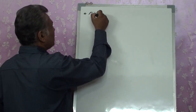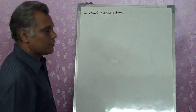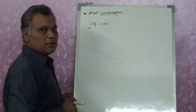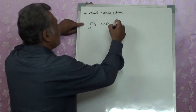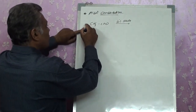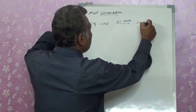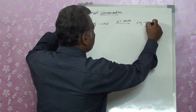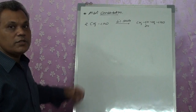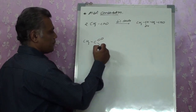First, we will understand aldol condensation. If we have CH3CHO — that means an alpha carbon is present and it contains alpha hydrogens — this compound undergoes the reaction. It reacts with dilute NaOH, taking two moles. The product formed is CH3CH(OH)CH2CHO. Let's understand the mechanism of how this reaction proceeds.